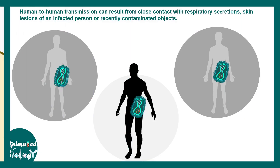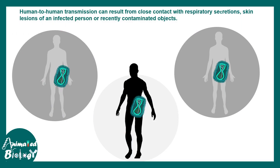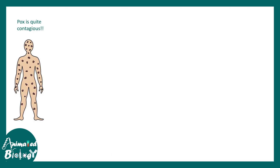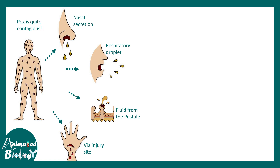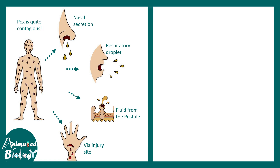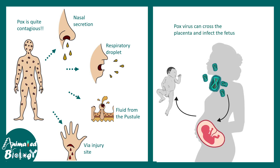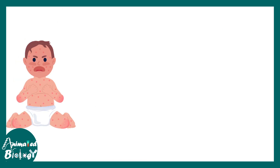Human-to-human transmission can occur via respiratory droplets, nasal secretions, fluid from pustules, or even via an injury site. Transmission can also occur from mother to baby, since the variola virus can actually cross the placenta, though these incidents are much rarer.